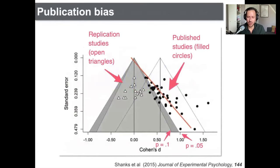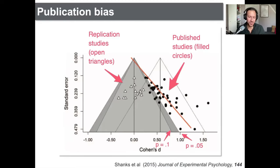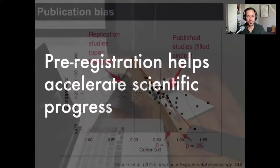Here's another nice demonstration from a different research field. The published studies prior to pre-registration all seem to hover around that magical 0.05 statistical significance line. But as soon as replication studies were released within this field, all the effect sizes shrank to around zero. So one of the benefits of pre-registration is reducing analytical flexibility.